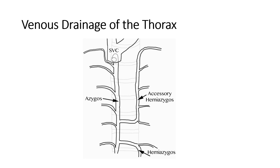Most of the blood drained from the thorax is returned to the heart via the azygous system. On the right side of the body, the azygous vein ascends from the level of the diaphragm and drains into the superior vena cava — or the caudal vena cava in the horse. On the left side of the thorax, the accessory hemiazygous (upper thorax) and the hemiazygous (lower thorax) drain blood from the left thoracic wall and cavity to the azygous for return to the heart. The azygous system drains the back, thoracic wall, and mediastinal viscera.